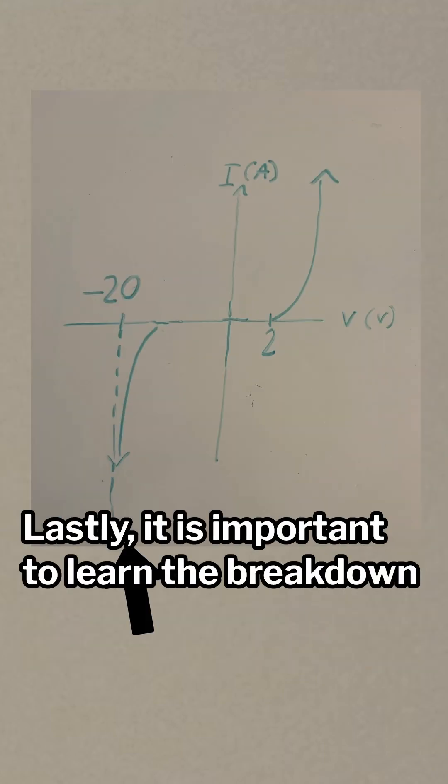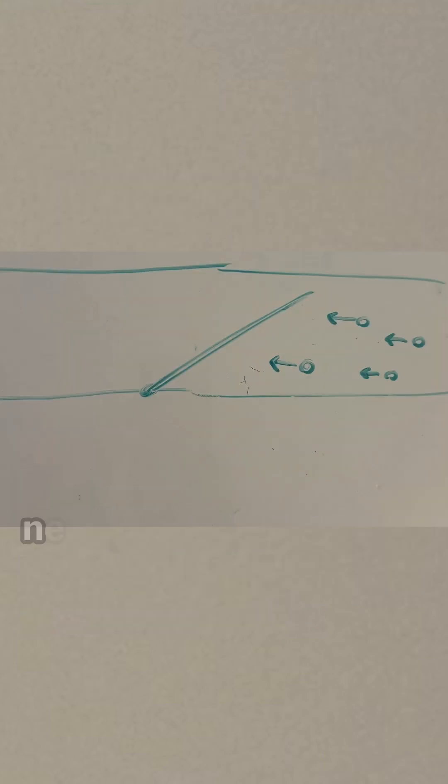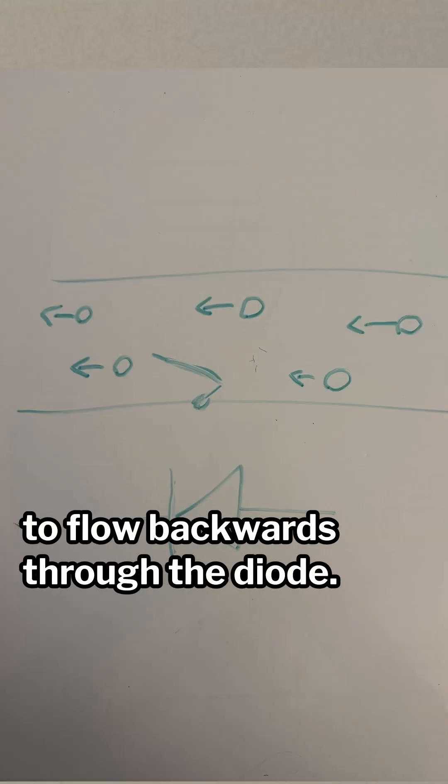Lastly, it is important to learn the breakdown voltage of a diode. The breakdown voltage is the minimum amount of voltage needed to allow current to flow backwards through the diode. For most diodes, this is a bad thing.